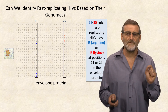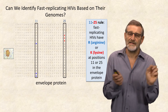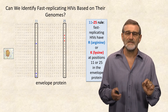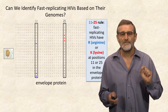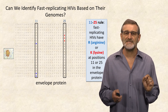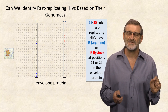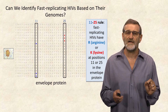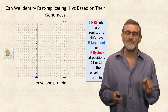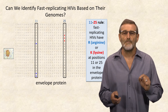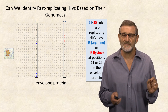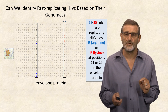Biologists figured out that if you shift and align all these HIV sequences in a specific way, then an interesting pattern emerges. Fast-replicating HIV genomes have amino acid arginine or lysine at positions 11 and 25 of their envelope proteins, allowing a doctor to diagnose this subtype. But how do you know what is the correct alignment that reveals the 11-25 rule?